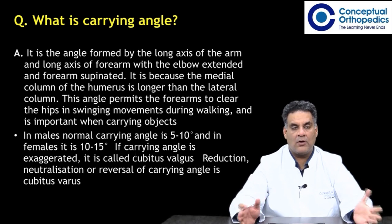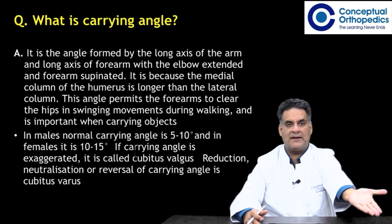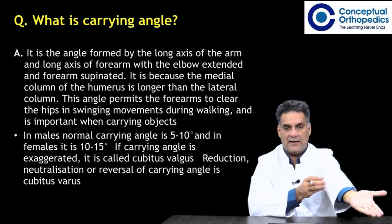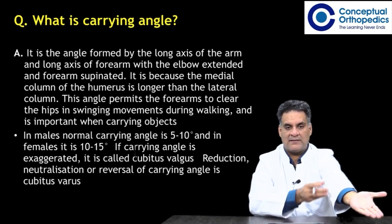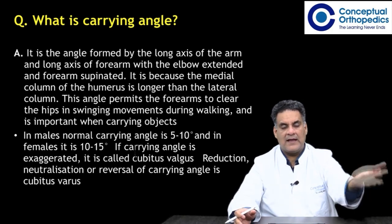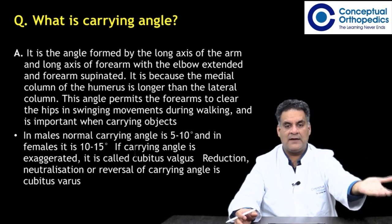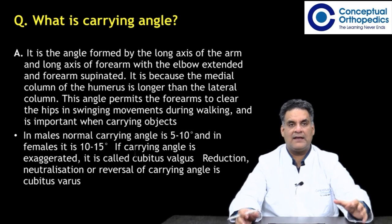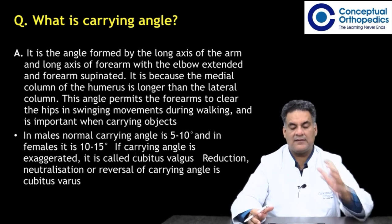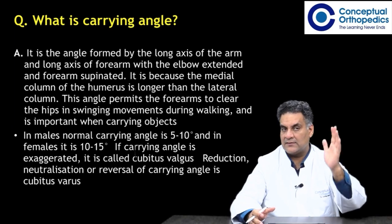What is the carrying angle? It is the angle formed by the long axis of the arm and the long axis of the forearm with the elbow extended and the forearm supinated. It exists because the lower end of the trochlea — the medial end of the humerus — is longer compared to the lateral column, causing a mild valgus angle. The carrying angle ranges from 5 to 10 degrees in males and 10 to 15 degrees in females. An exaggerated carrying angle is called cubitus valgus, a reduced carrying angle is called cubitus varus, and a zero carrying angle is called cubitus rectus.